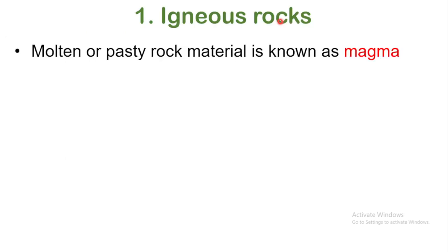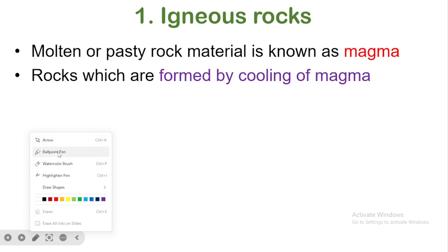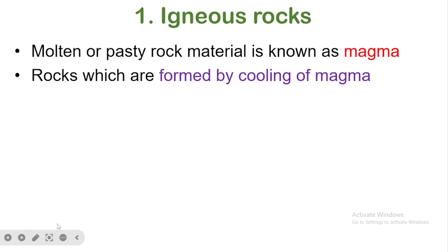The first type is Igneous Rock. Igneous rock is formed from molten, pasty rock materials. This molten rock material is known as Magma. When magma cools and solidifies, it is called Igneous Rock. Magma from the surface is also referred to by its color and depth of formation.